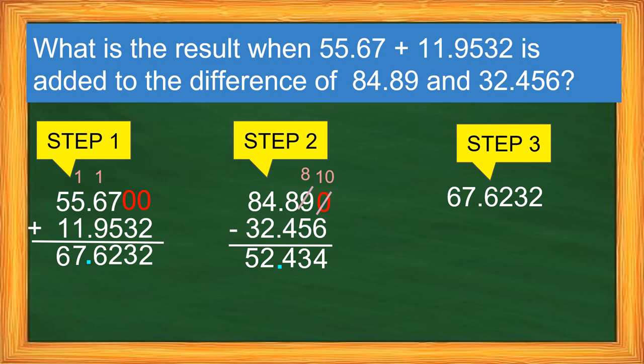Step 3. We'll add the results of the two. So 67.6232 plus 52.434. Again, there's a blank space. We'll add 0. And then we'll add. So this is 2, 7, 5. And then 6 plus 4 is 10. So this will be 0, carry 1. And then 1 plus 7 plus 2 is 10 again. So 0 carry 1. And then 1 plus 6 is 7 plus 5, that is 12. So final answer is 120.5072.